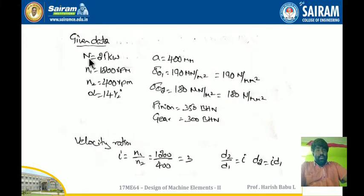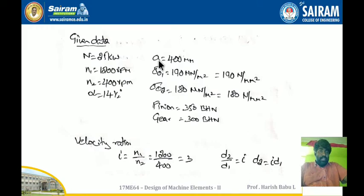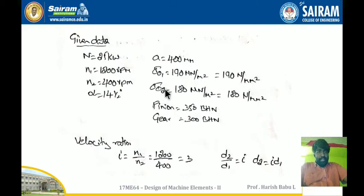The data given: power is 25 kW, motor rpm N1 is 1200 rpm, compressor rpm N2 is 400 rpm, pressure angle alpha is 14.5°. Center distance between the shafts is 400 mm. The allowable stress sigma_0 is given in MN/m² converted to N/mm². The pinion is made of forged steel with static stress 190 MN/m² and 350 BHN. The gear is made of cast steel with static stress 180 MN/m² and 300 BHN.